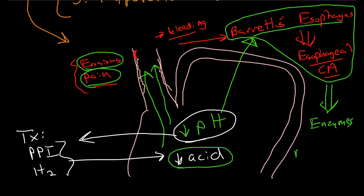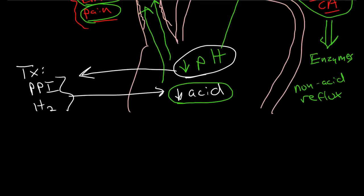So, non-acid reflux causes just as much Barrett's esophagus and esophageal cancer. And interestingly enough, there are many patients, there are a significant portion of patients that have symptomatic non-acid reflux. So, you can give them all the PPIs and H2 blockers in the world and they still don't respond.